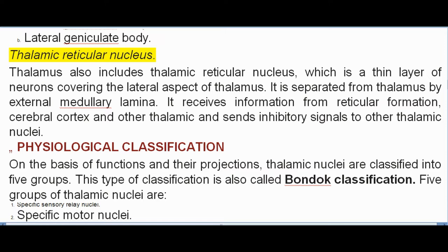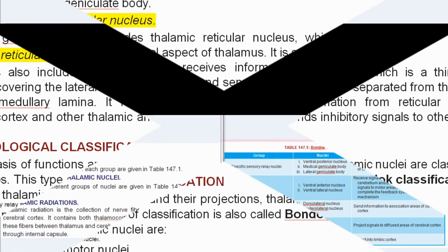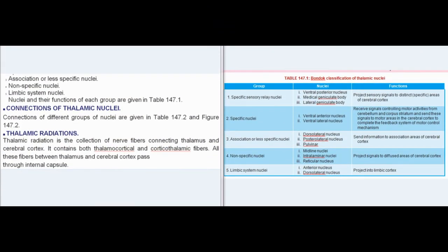Physiological classification: on the basis of functions and their projections, thalamic nuclei are classified into five groups. This classification is also called Bondoc classification. The five groups are: specific sensory relay nuclei, specific motor nuclei, association or less specific nuclei, nonspecific nuclei, and limbic system nuclei. Nuclei and their functions of each group are given in table 147.1.